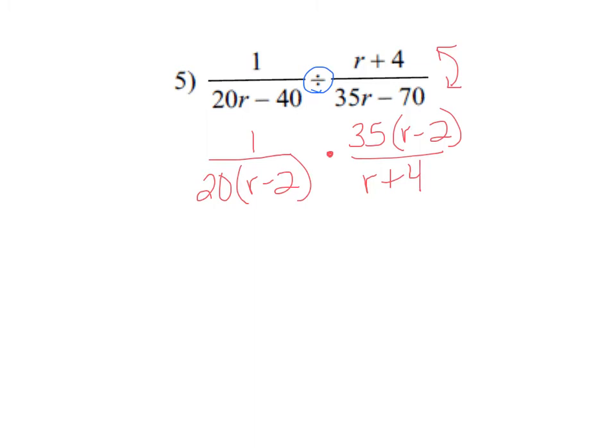Now I look to see what can reduce for me. The quick thing that jumps out is this r minus 2 and this r minus 2. Those will cancel out. The r plus 4 is kind of its own thing in parentheses there, its own quantity. Then the 20 and the 35, they're both divisible by 5, so I could reduce them both by 5. That goes in there 4 times, and there's 7.